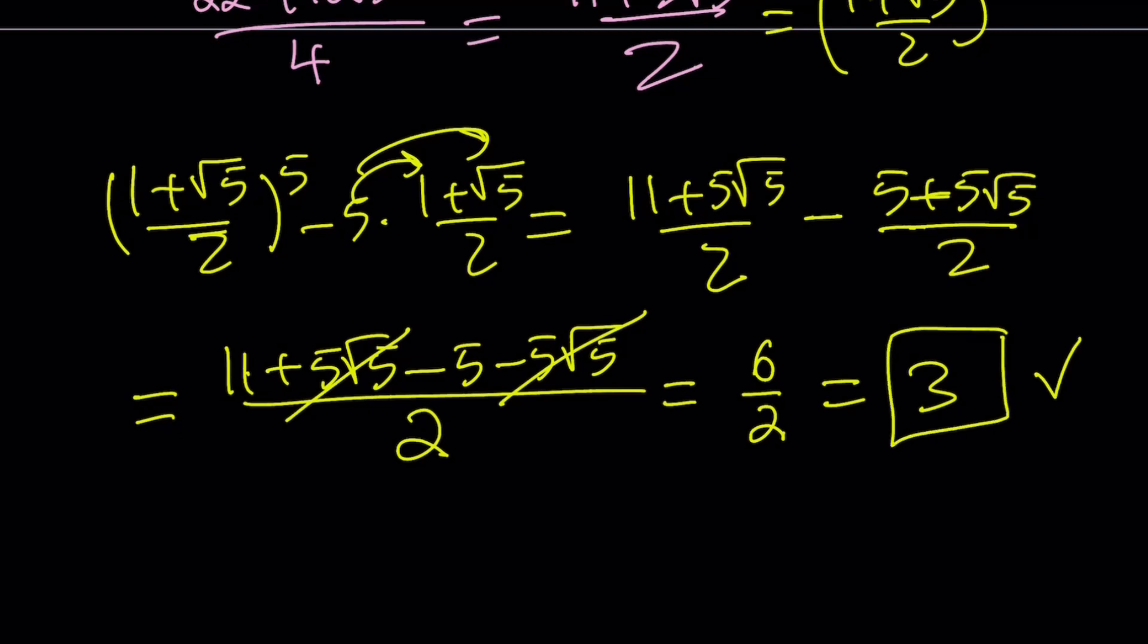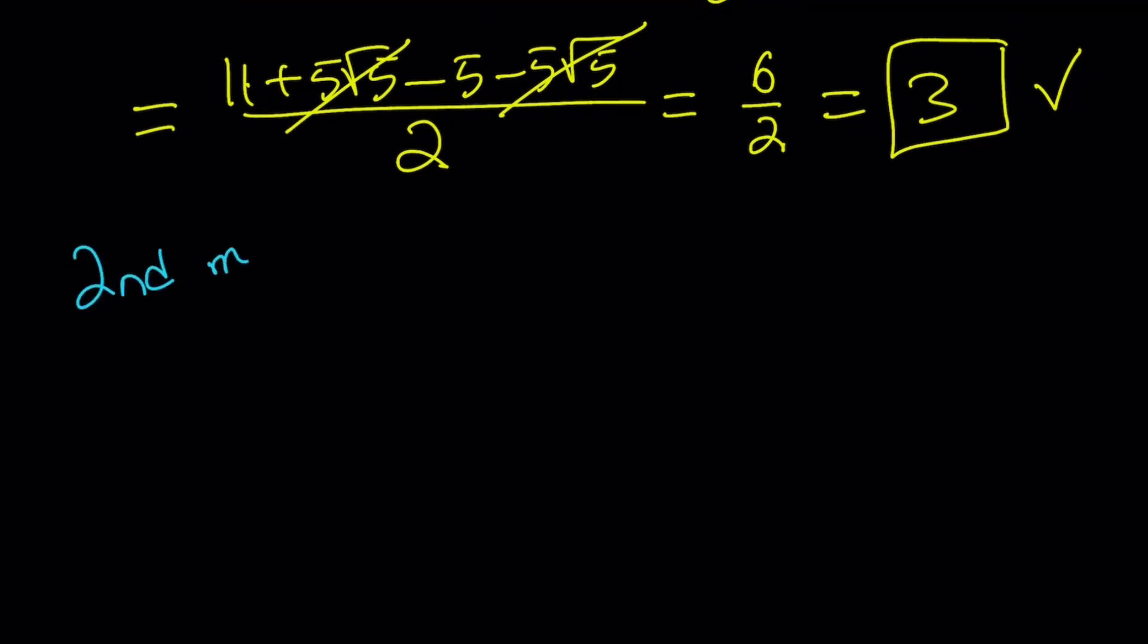This doesn't bring us to the end of the video because we're still going to look at the second method. Let's go ahead and look at the second method. Okay. Now remember the question was, if you know that x squared is x plus 1, then what is the value of x to the 5th minus 5x? And like I said earlier, if you use the negative version, you'll still get the same answer. You should. You can test it out. For my second method, I'm going to do a polynomial approach.